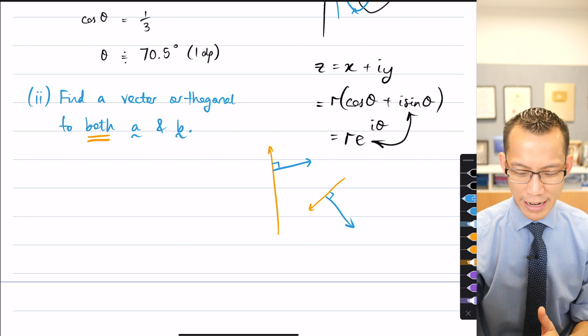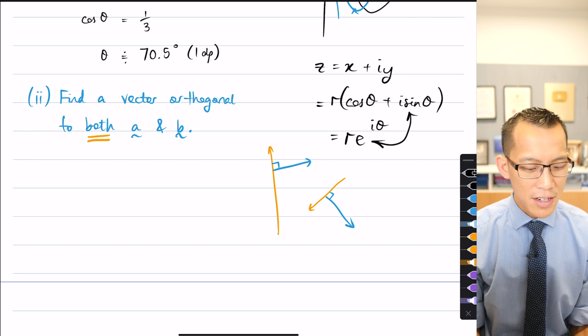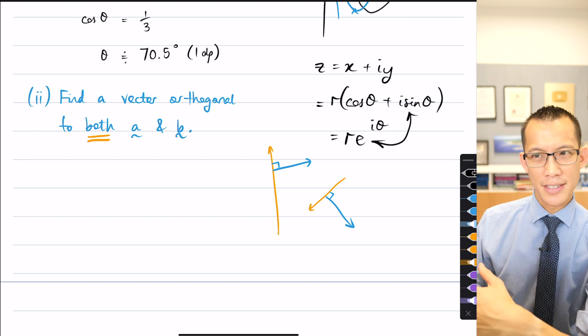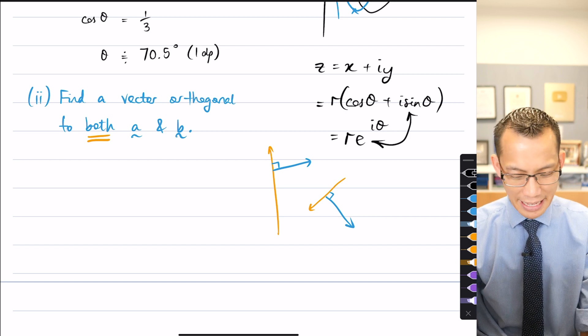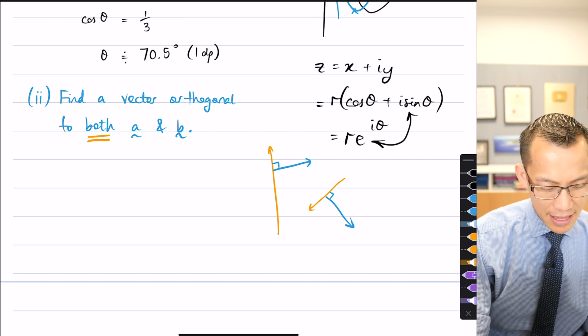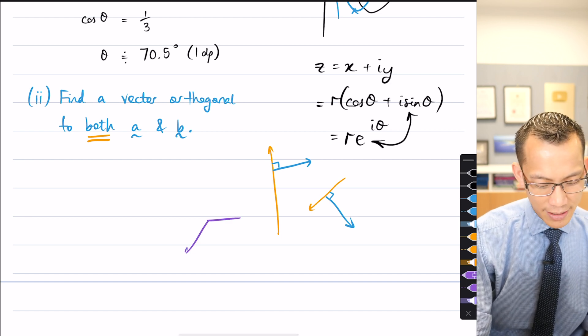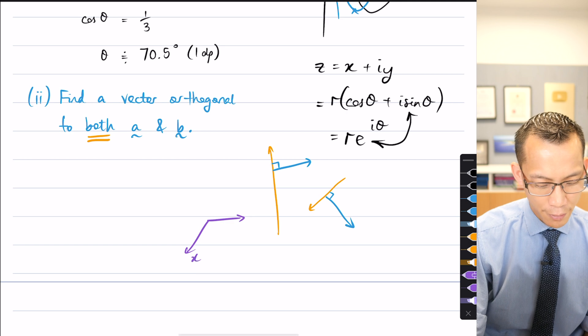But instinctively, I wonder if you recognize in the back of your mind, we've been working with third vectors that are orthogonal to a pair of vectors quite often, like even from the very first lesson, because I gave you guys the sort of XY plane and I said, hey, imagine if it was sitting flat.